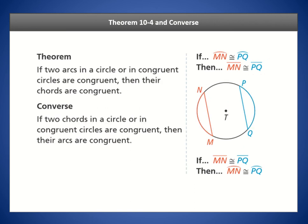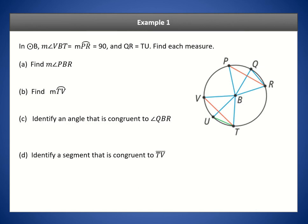The next theorem states that if two arcs are congruent — for example arc MN and arc PQ — then their corresponding chords must be congruent. These chords are the line segments connecting the endpoints of the arc. The converse states that if two chords are congruent, their corresponding arcs on the circle must also be congruent.